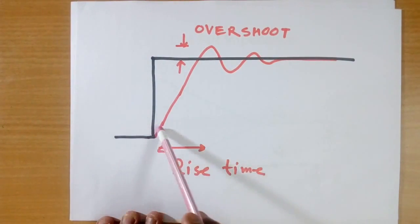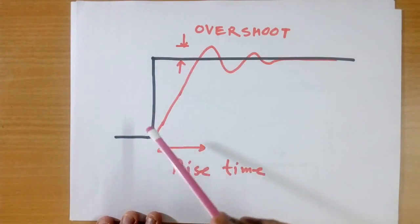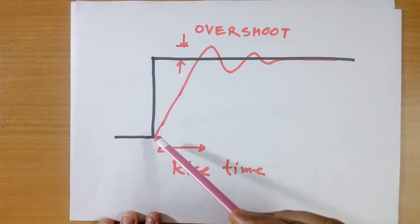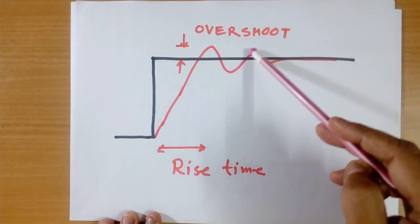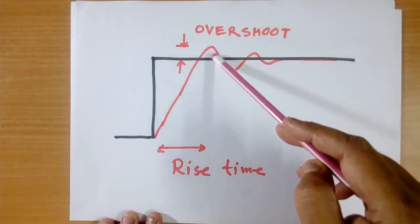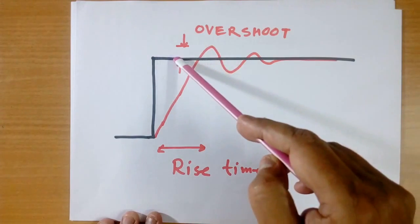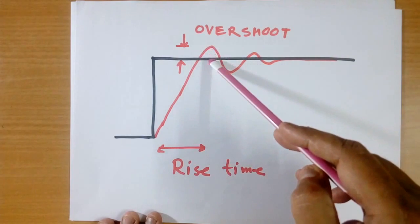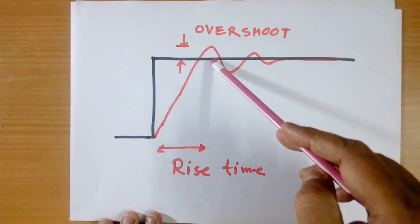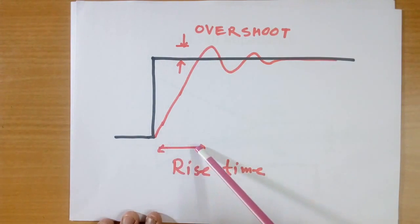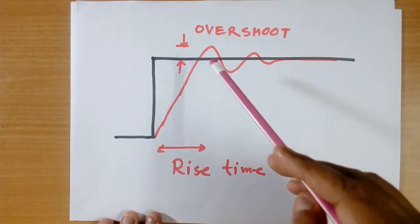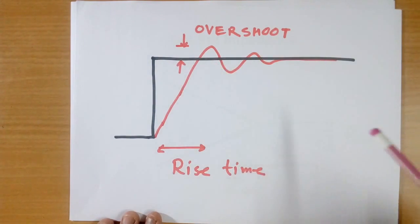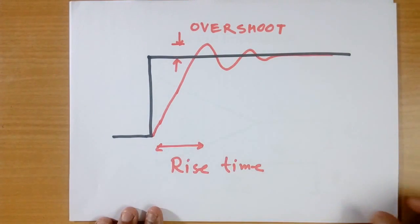Suppose our input is like this, then output will not follow input. Output will be like this. This is overshoot. This supply is 10 volt and this is 0.5 volt, so this becomes 5%. And this is rise time. If input frequency is low, overshoot is not a problem. But if input frequency is high, then this is to be taken care.